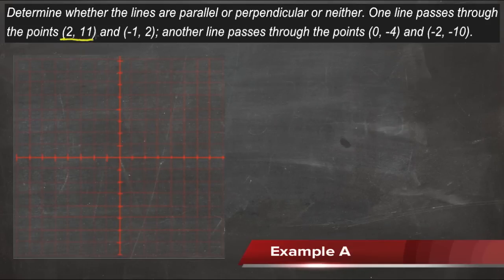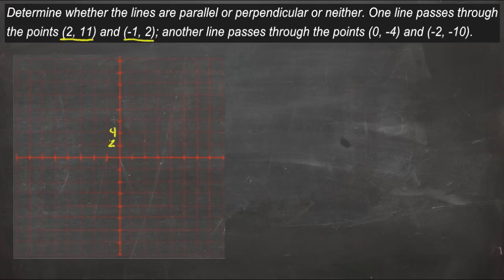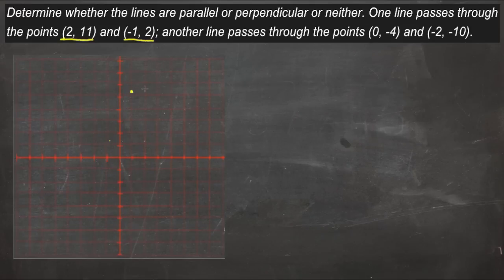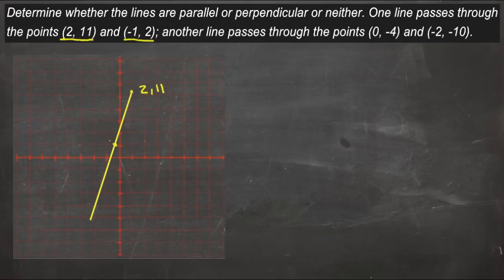This tells us that one line passes through the points (2, 11) and (-1, 2). On the graph, we'll set the scale at 2 each — so 2, 4, 6, and so on. Our first point is at (2, 11), and our second point is at (-1, 2). We'll quickly sketch that line in.